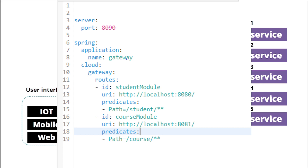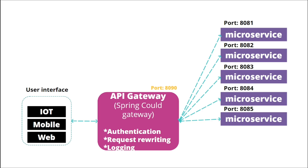But there was a problem of configuring the complete service URL if there are many instances running for the same service. In cloud-based services, we have a habit of changing the location of any service frequently, and we deploy services dynamically when there is demand. We deploy and undeploy services whenever there is a need. In that case, using Gateway alone for service registry is not possible.